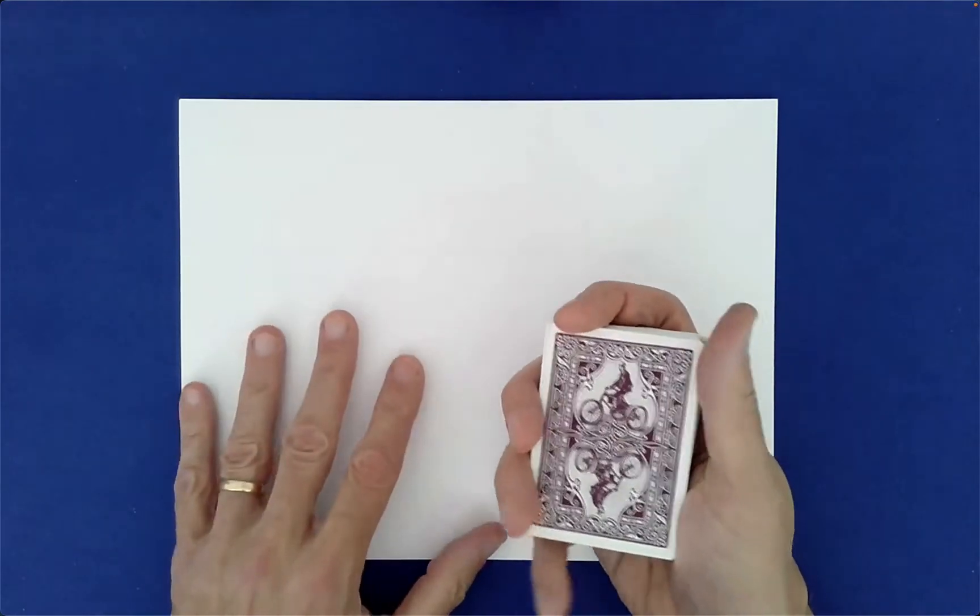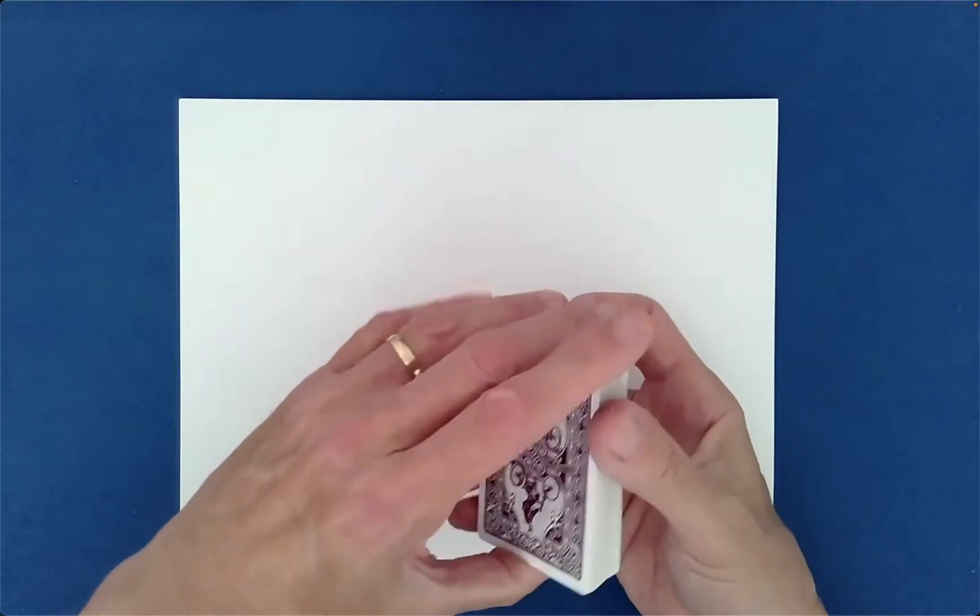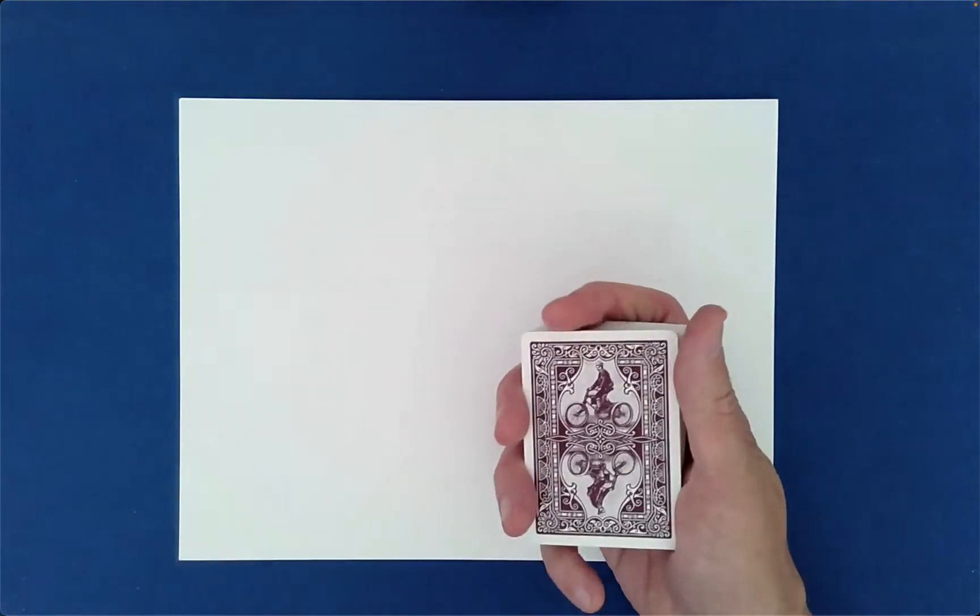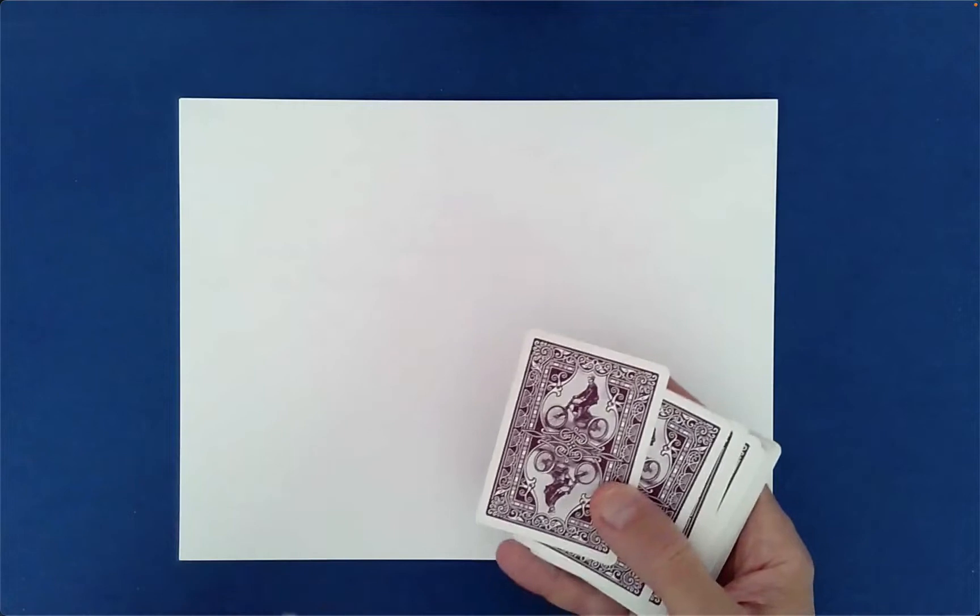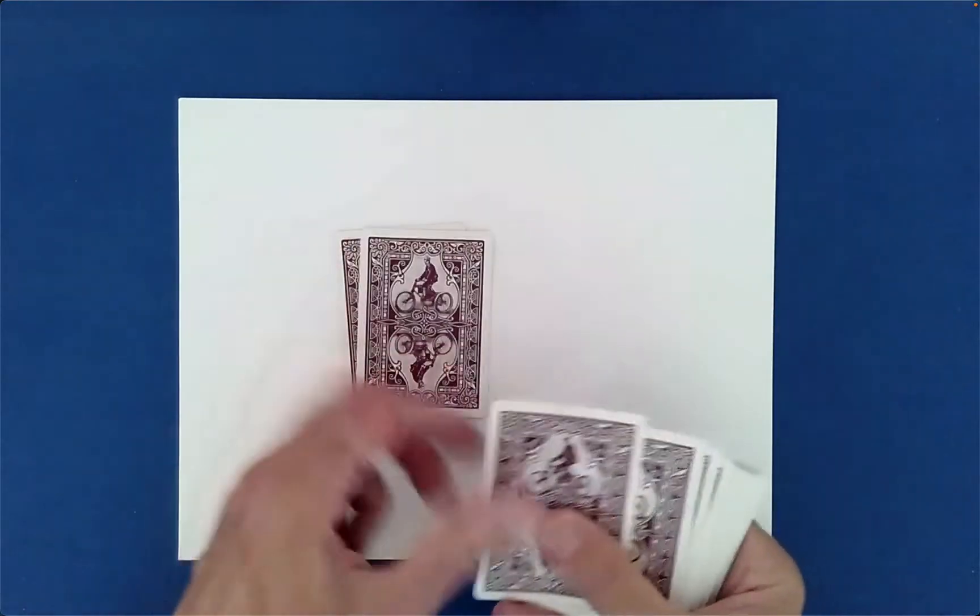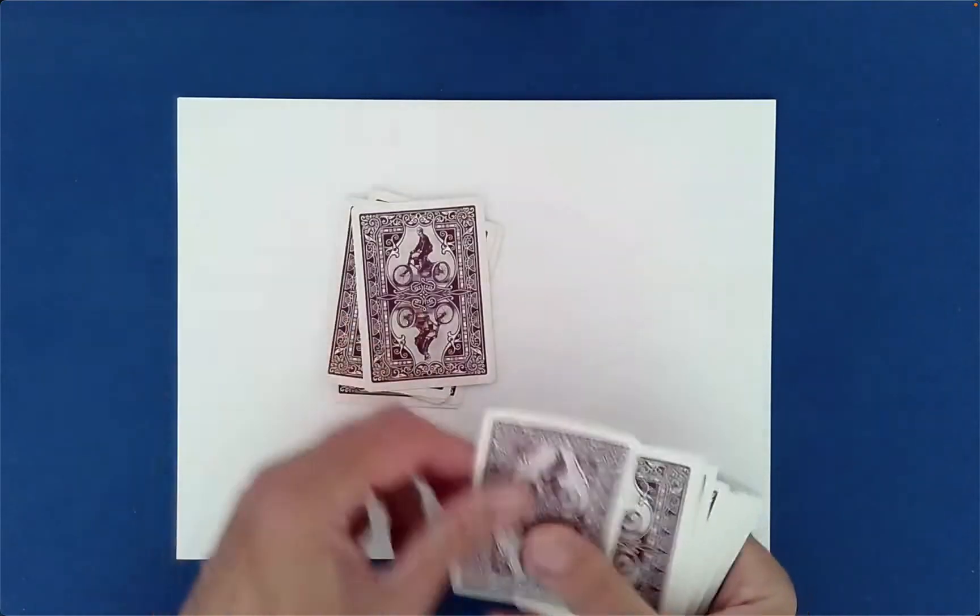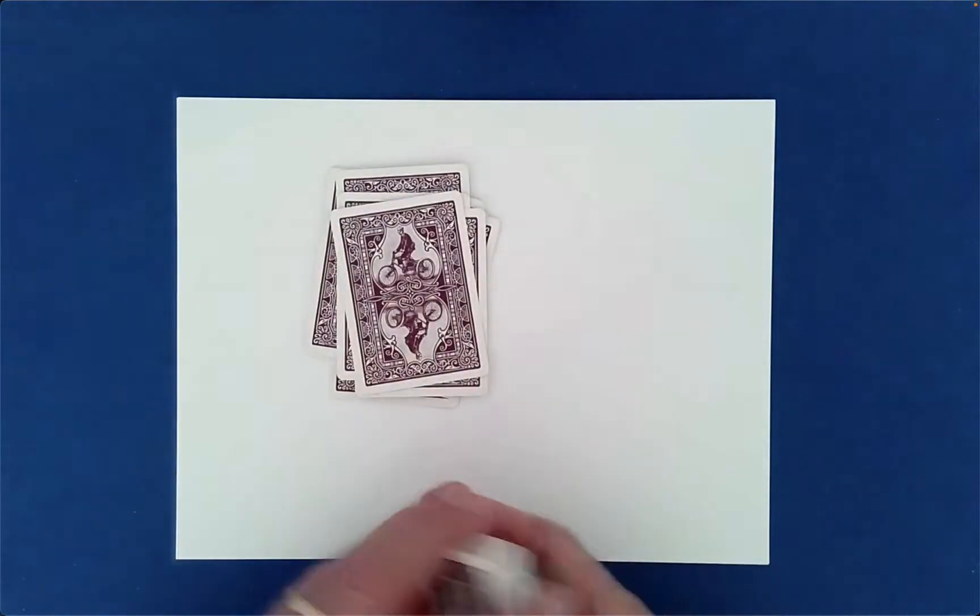Then you simply just tell the spectator we need nine cards for this effect, which you do. So you just deal out nine cards: one, two, three, four, five, six, seven, eight, nine. So we have nine cards now.